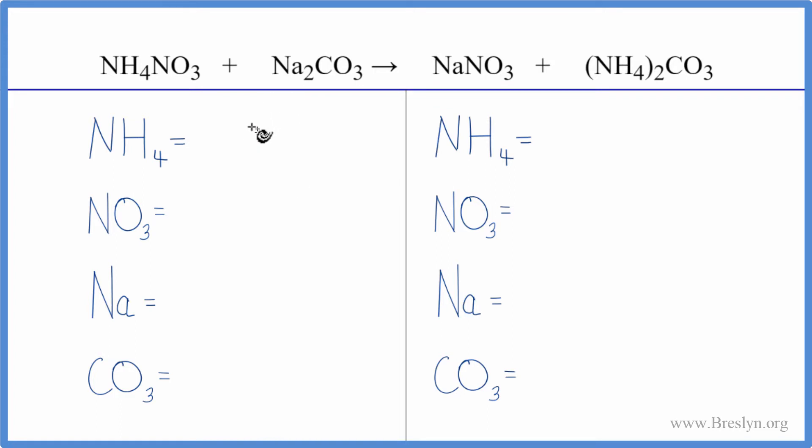When we have double displacement reactions with these polyatomic ions, these ions that show up on both sides, so we have NH4 here and here, we have the nitrate NO3 here and here, we can count those as one thing and that makes it a lot easier to add everything up and to balance. So let's see how that works.